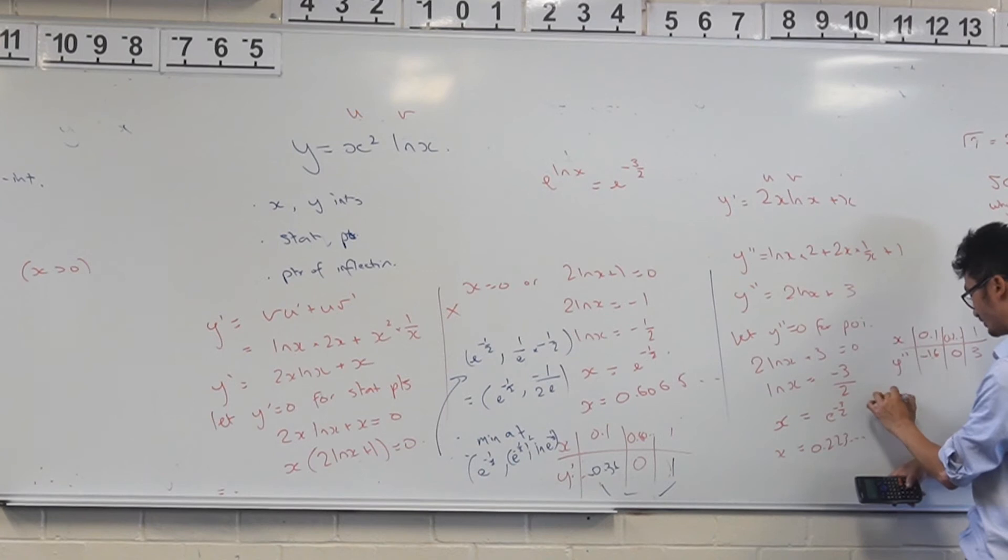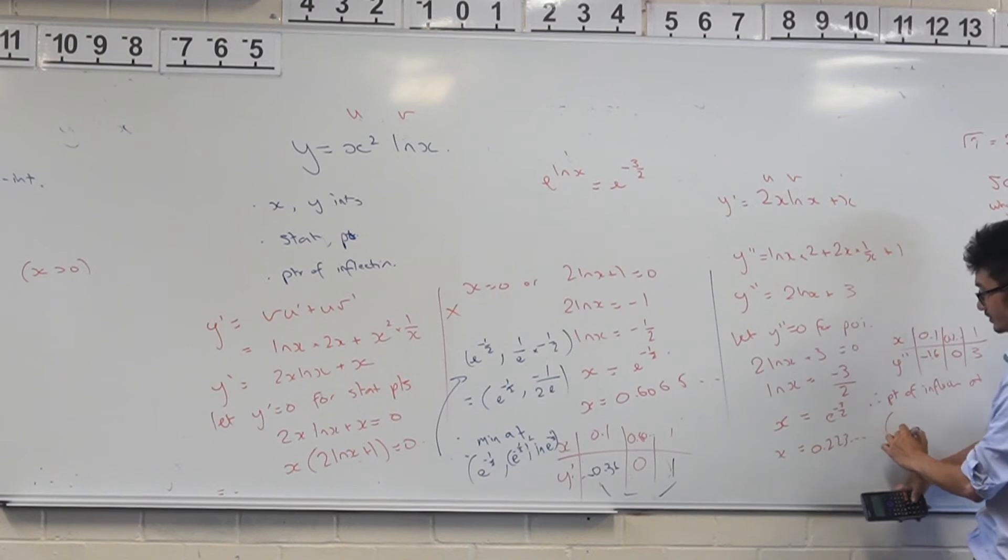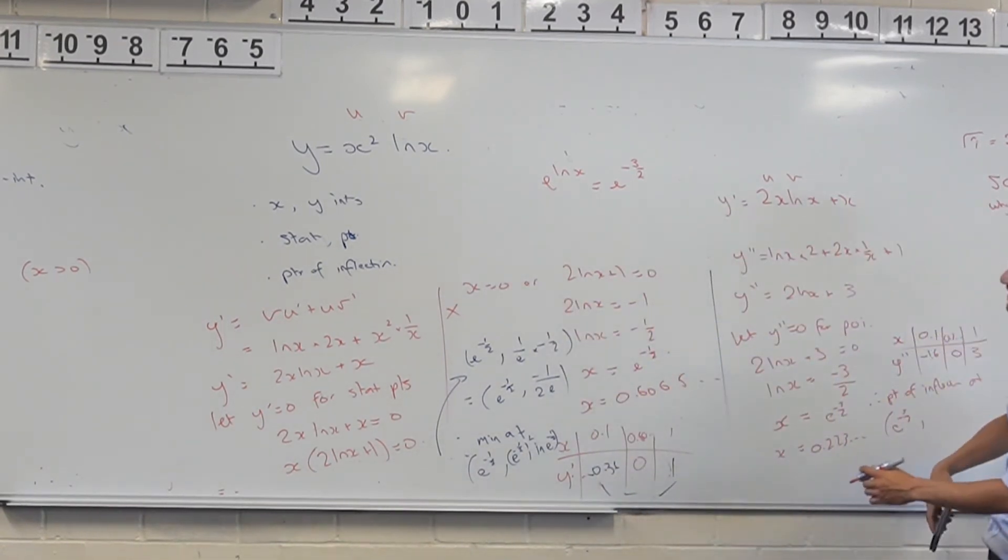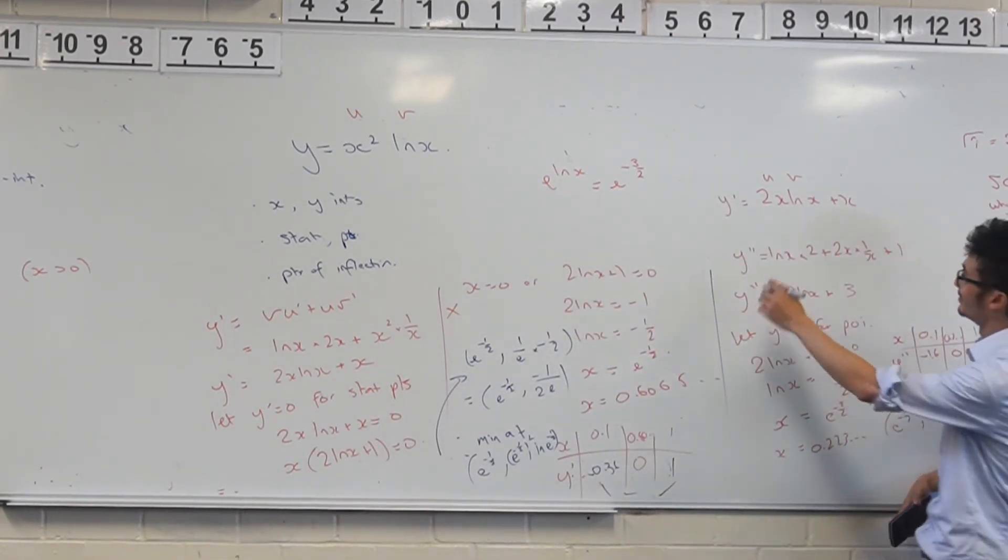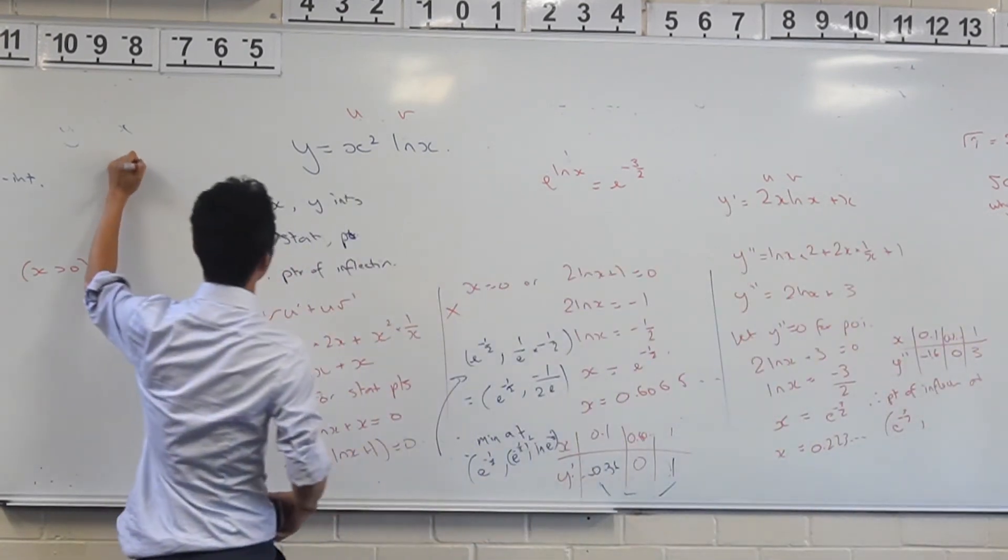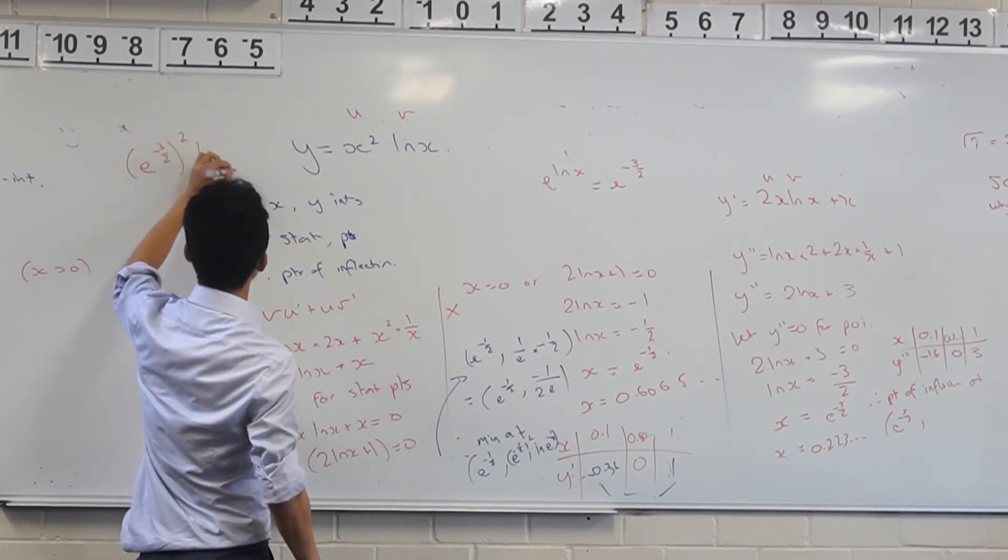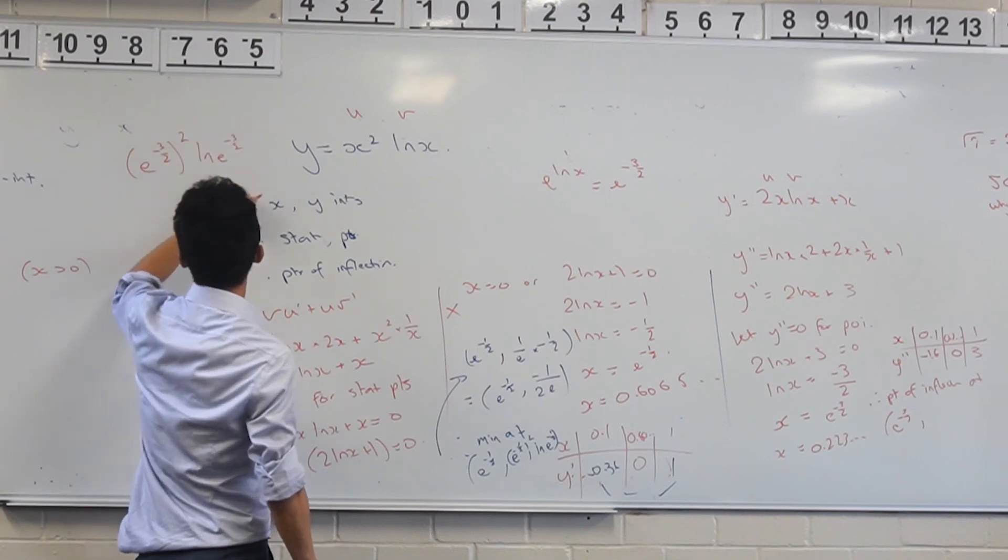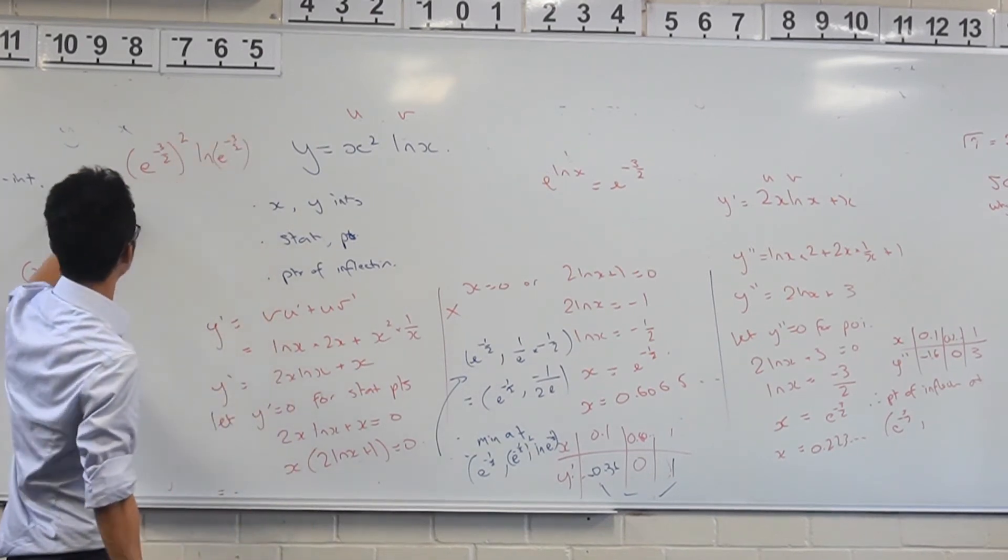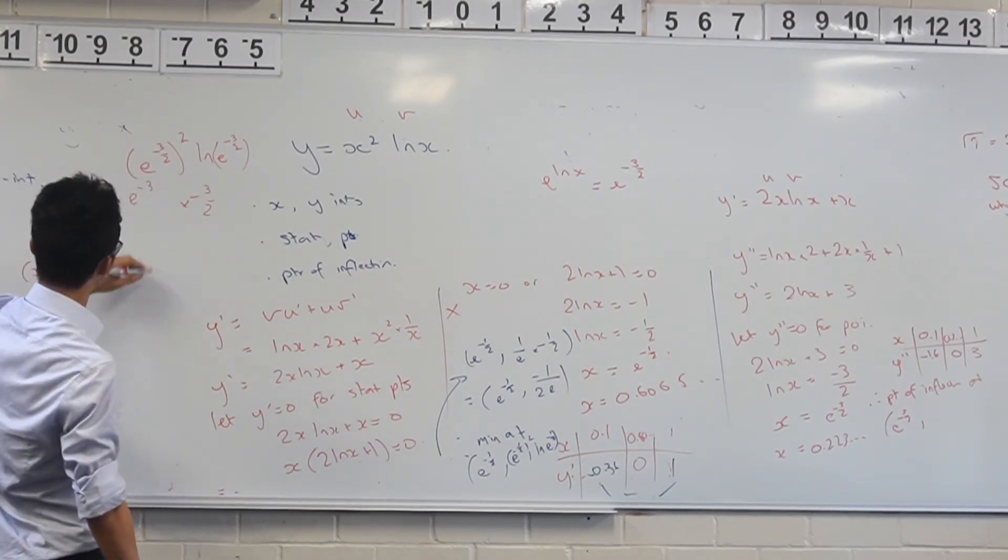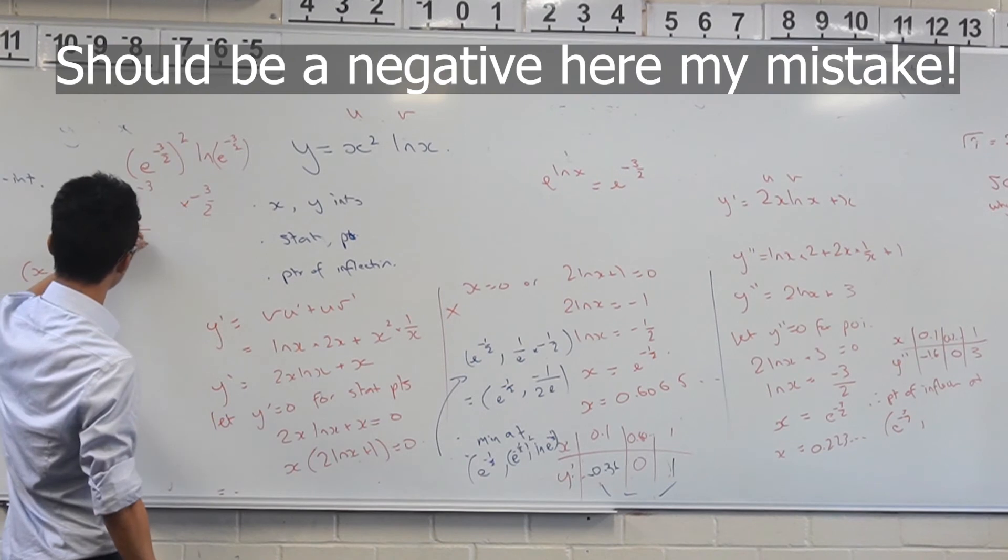So therefore, there is a point of inflection at e to the negative 3 over 2. Oh, you guys are going to love this one. Substitute back into this guy. I wish I could come up with some more nice examples. Let's simplify it over here. So e to the negative 3 over 2 all squared times ln of e to the negative 3 over 2. Well, that just becomes negative 3 over 2. So that's okay. And this just becomes e to the negative 3. So that's just going to be negative 3 over 2e cubed.